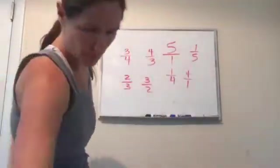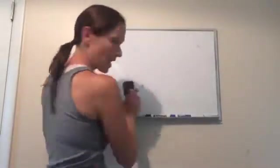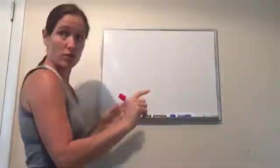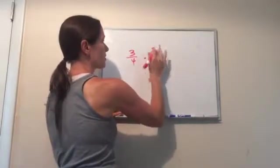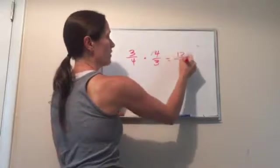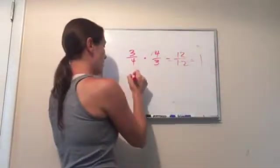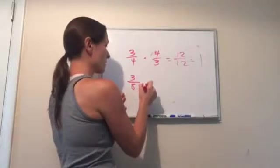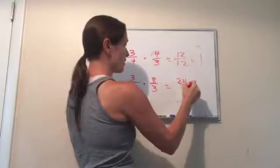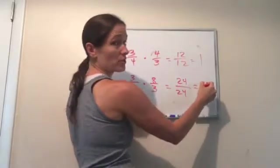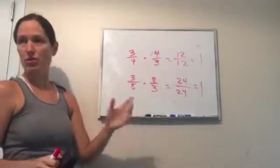Now check this out. If I multiply reciprocals, guess what always happens? Three-fourths times four-thirds equals twelve over twelve, which equals one whole. What about three-eighths times eight-thirds? Twenty-four over twenty-four, which equals one. So guess what? Every time you multiply reciprocals you will always get the answer one. Got it? That's how that works.